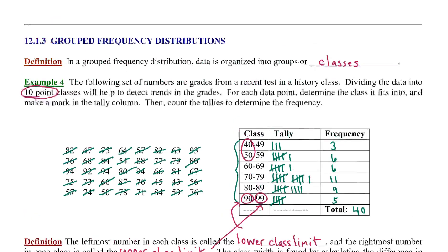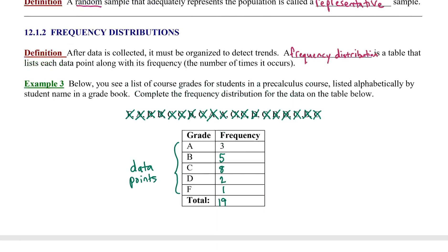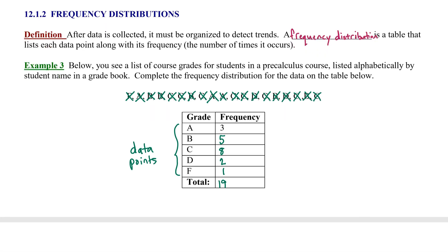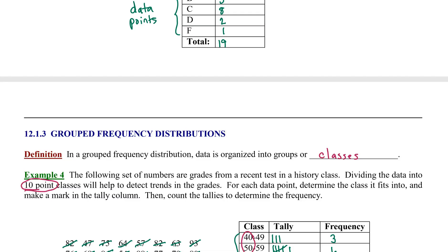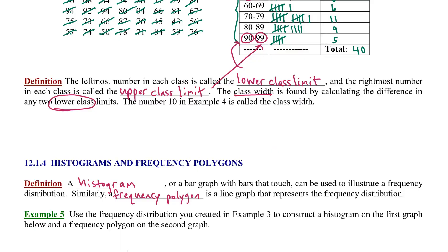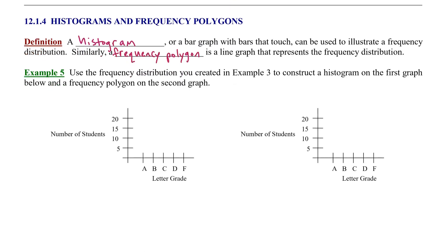Scroll back for a minute to Example 3 that we completed on page 1. We had a list of grades and took the frequency for each of those grades. Keep this in your sights as we construct both our histogram and our frequency polygon.